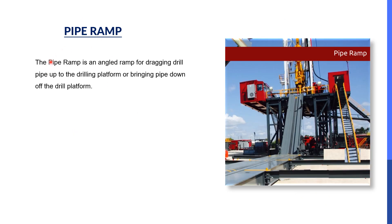The next one is the pipe ramp. As we are looking at the image, this one is like a slide — this one is a pipe ramp. The pipe ramp is an angled ramp for dragging drill pipe up to the drill platform or bringing pipe down from the drill platform. Whenever the drill pipes are needed on the rig floor, they are lifted through the pipe ramp. After use, when the pipes have to be put back down from the rig floor, the same pipe ramp is utilized.